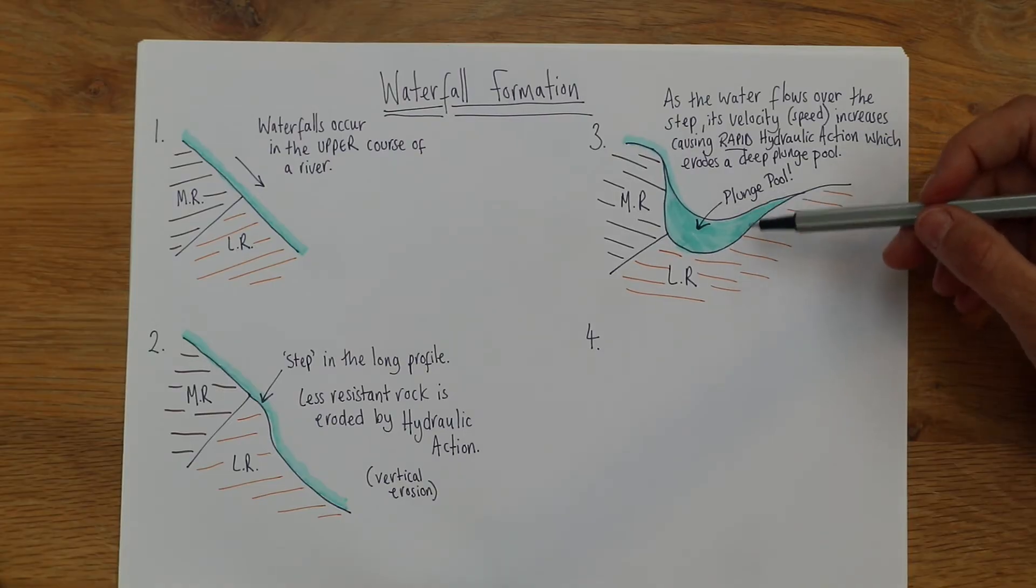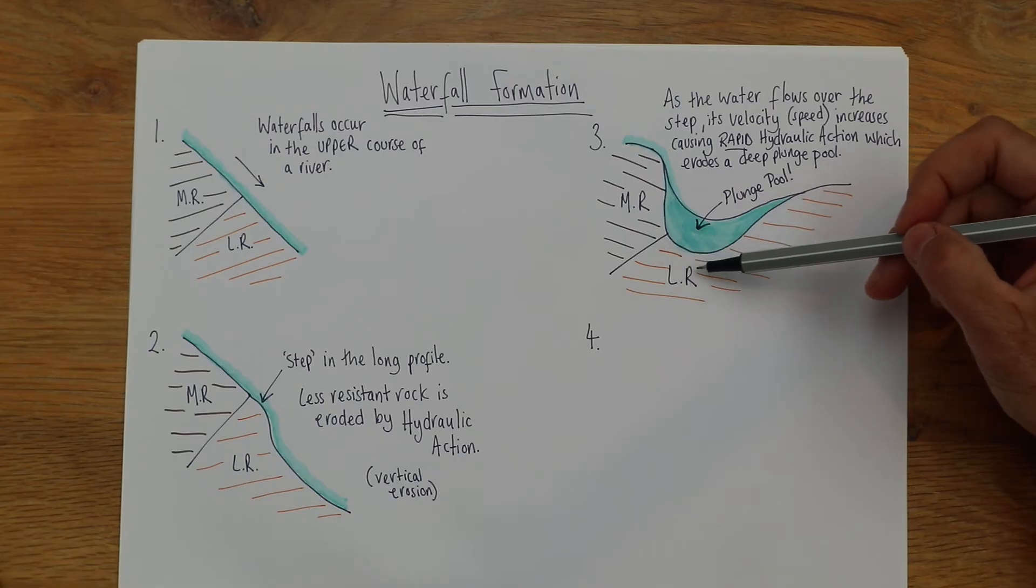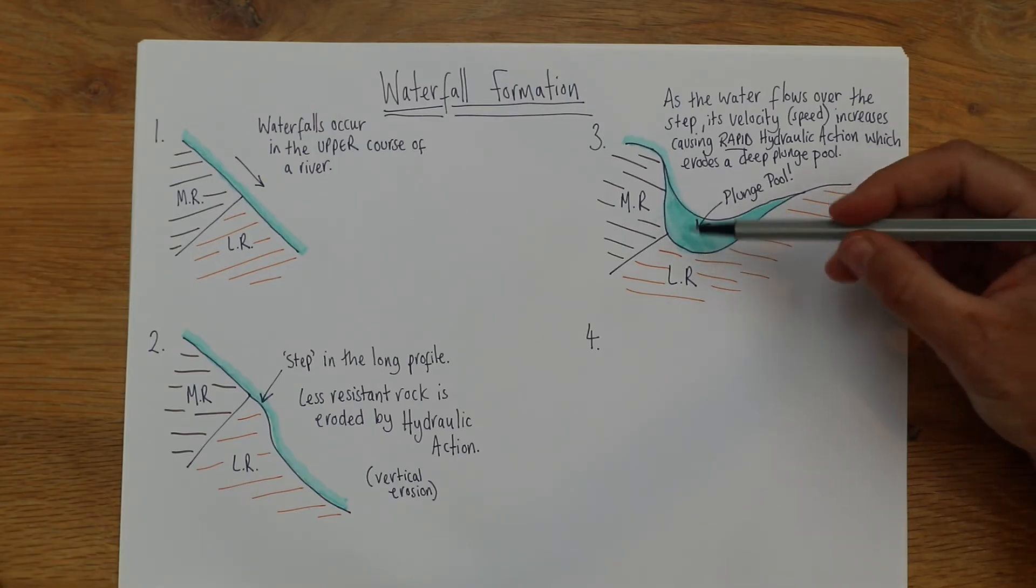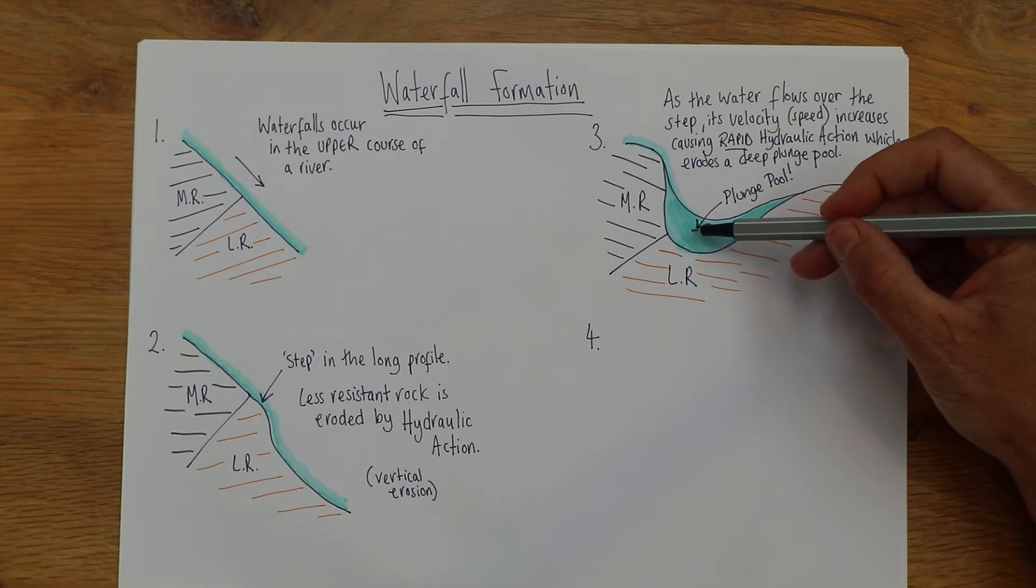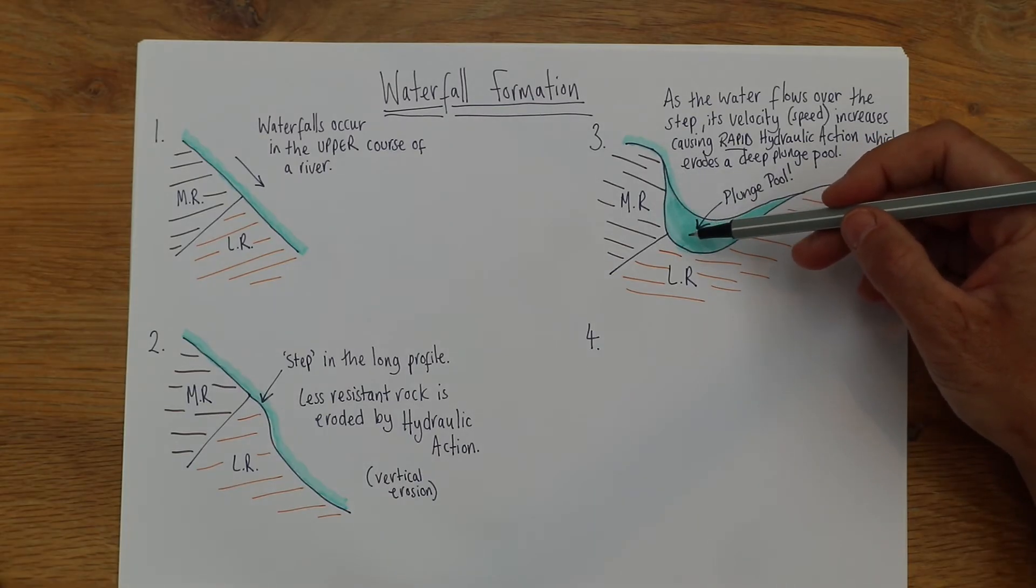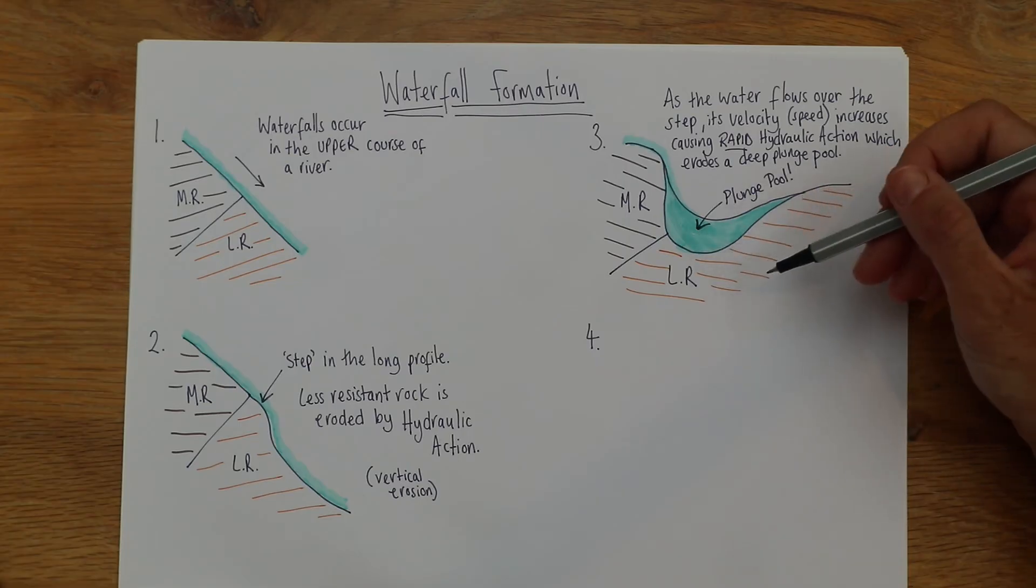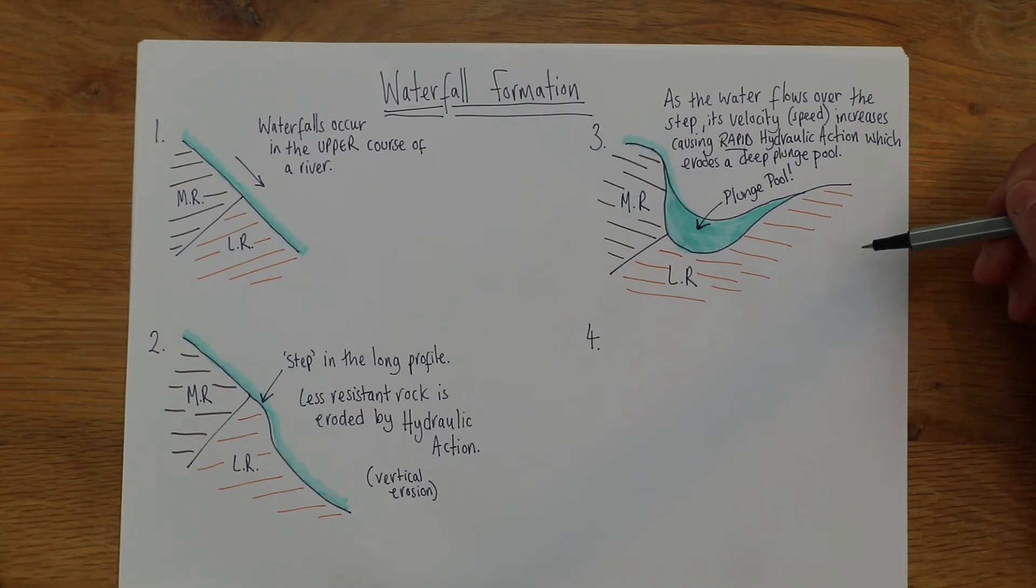Now if you ever do get the chance to go up close to a waterfall, perhaps if you've been to Iceland with me or anywhere else, this is the most dangerous section. There's one in Iceland we get to walk actually behind. It was featured in a James Bond movie. I'm always really nervous of this bit because they're really deep and it's not just the depth, it's the water coming in fast from above. It's violent and people do die in plunge pools. They are the trickiest bit of a waterfall.